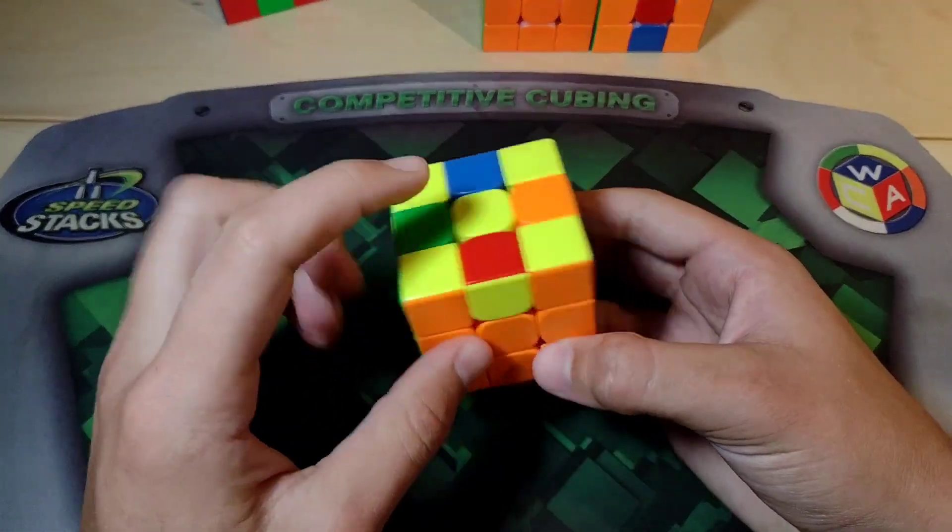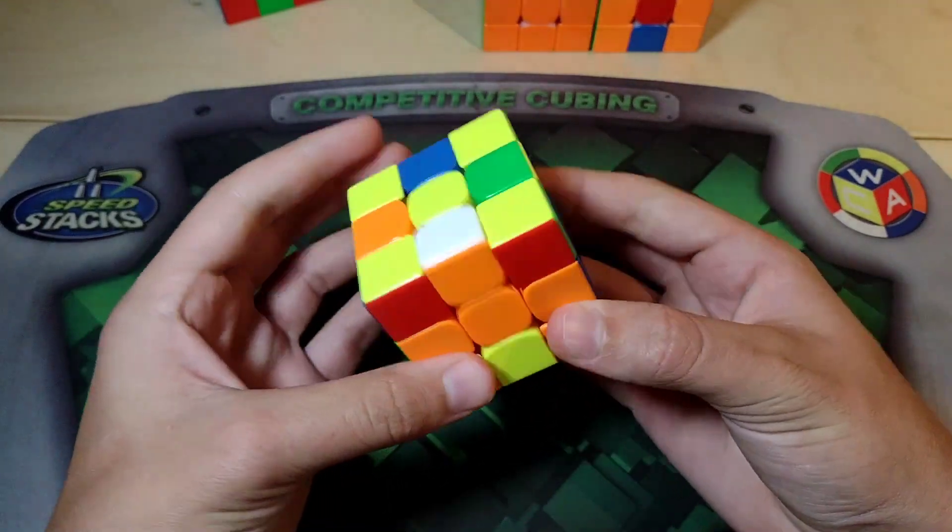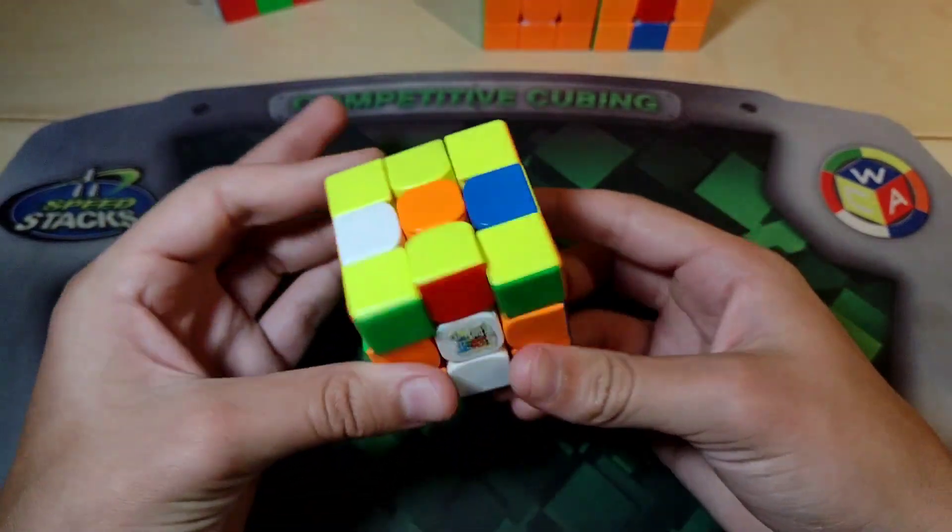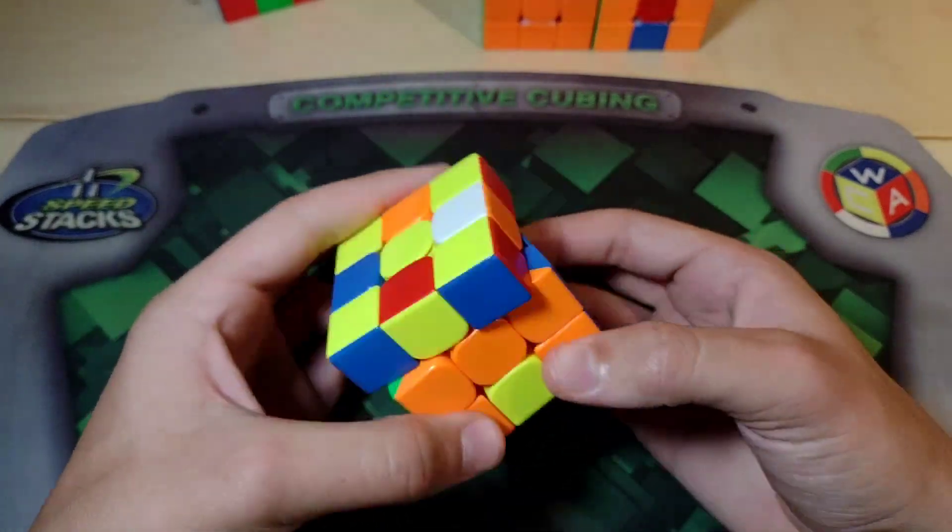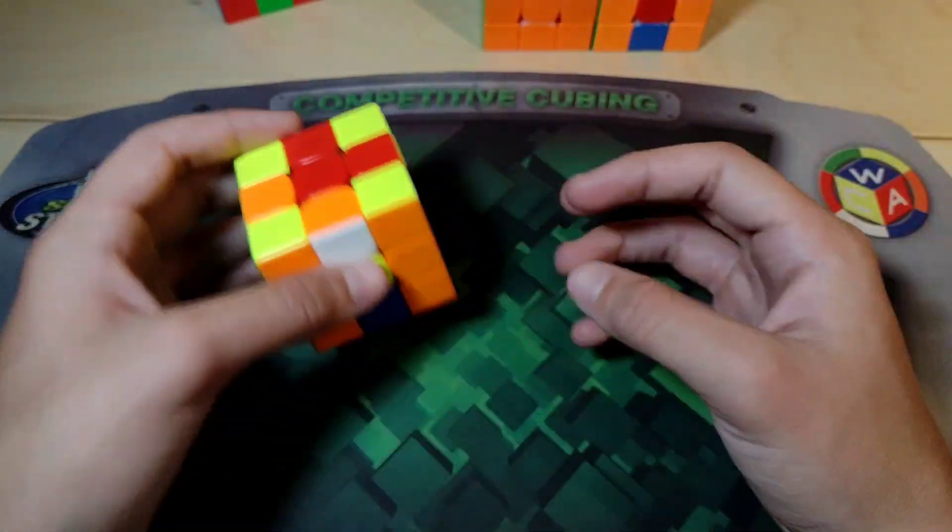It's also worth noting that when you put this in the bottom, the LR edge on the side is going to flip sides because of the U2. You can see the U2 moves it over there. And then we'll put that onto the bottom, like so, and then we can get EO up.